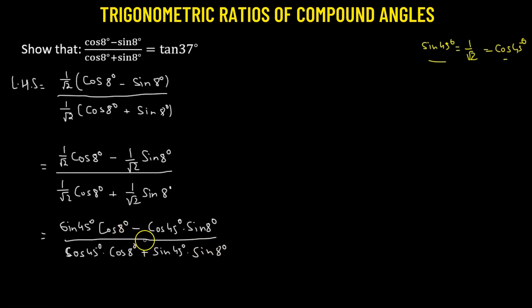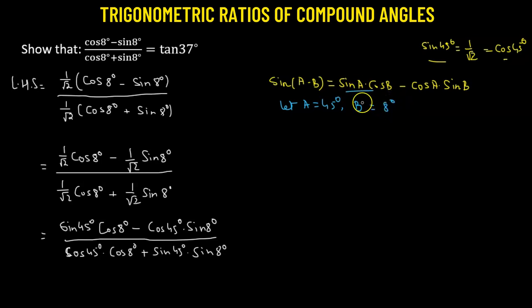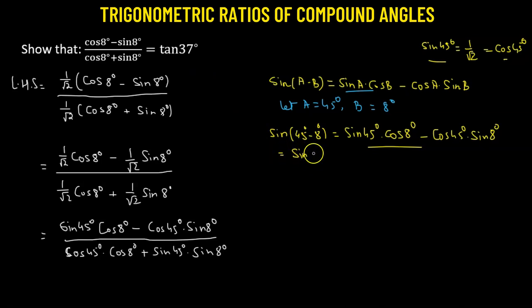Now, is the expression in the numerator and denominator looking familiar? Let me state two formulas. We know that sine of (a minus b) equals sine a times cosine b minus cosine a times sine b. If we let a equal 45 degrees and b equal 8 degrees, the right-hand side becomes sine 45 degrees times cosine 8 degrees minus cosine 45 degrees times sine 8 degrees — which is exactly the numerator expression. This can be written as sine of (45 degrees minus 8 degrees), which equals sine 37 degrees. So our numerator is sine 37 degrees.